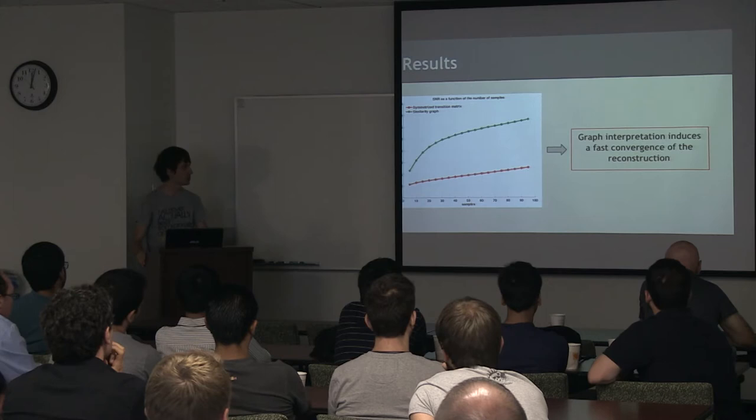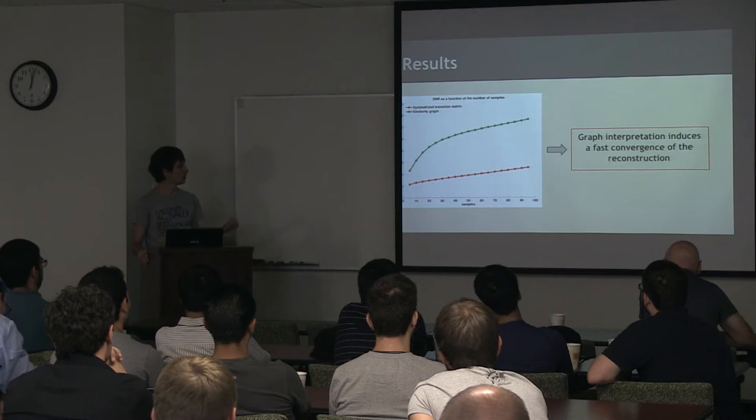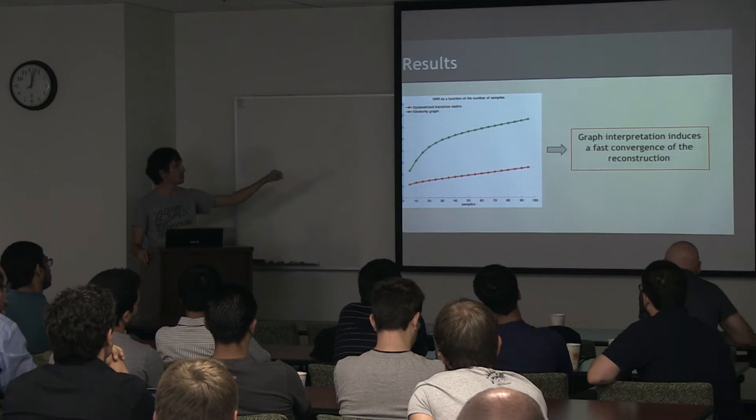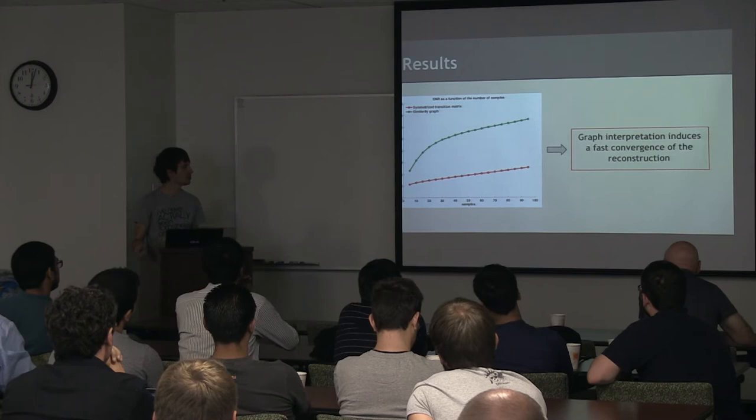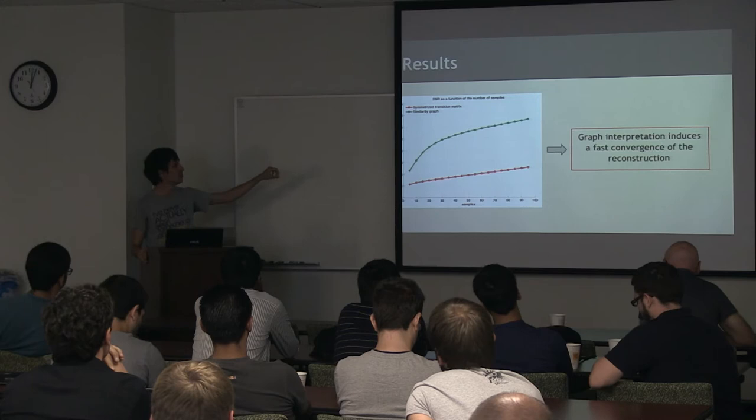Here are the results I get. You can see here the signal-to-noise ratio in function of the number of known samples. In green it's the method when I use the similarity graph, and in red it's when we use the symmetrized transition matrix. You can see that the convergence is way faster with our similarity graph. There is like 20 dBs of difference.